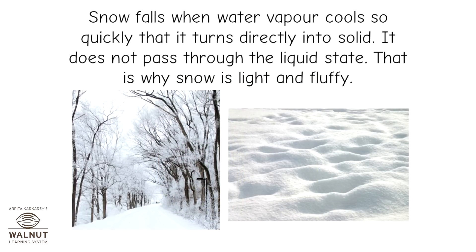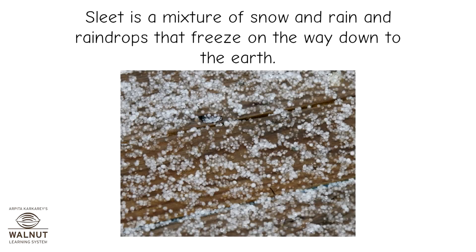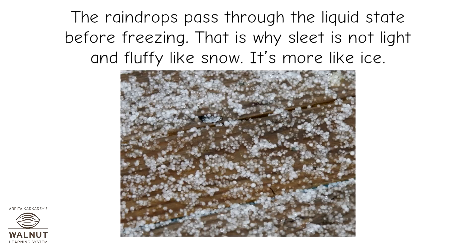Snow falls when water vapor cools so quickly that it turns directly into solid. It does not pass through the liquid state. That is why snow is light and fluffy. Sleet is a mixture of snow and rain, and raindrops that freeze on the way down to the earth. The raindrops pass through the liquid state before freezing. That is why sleet is not light and fluffy like snow.